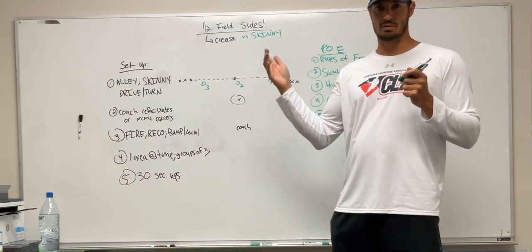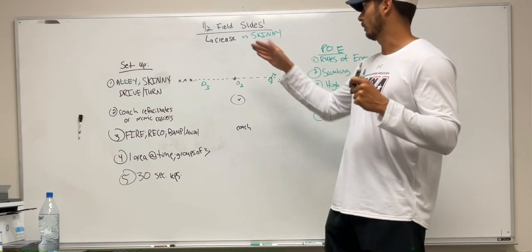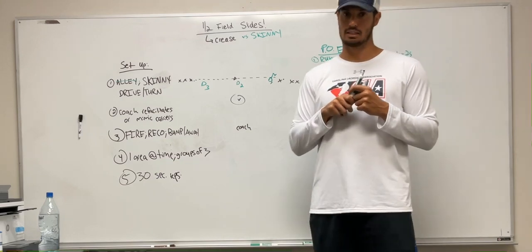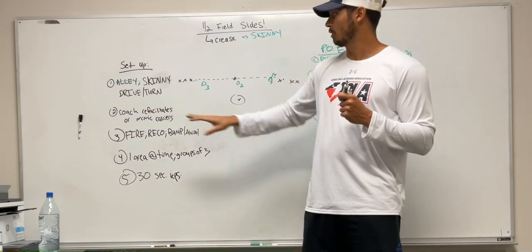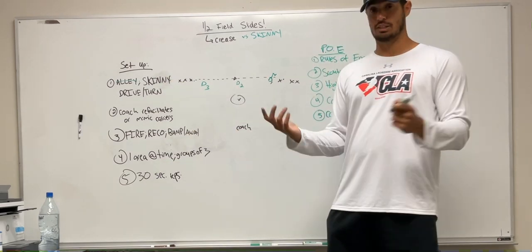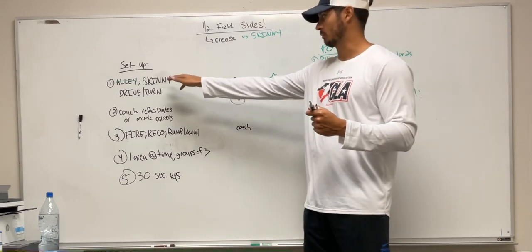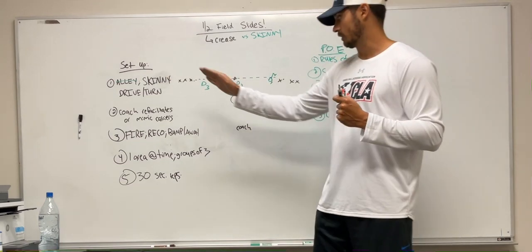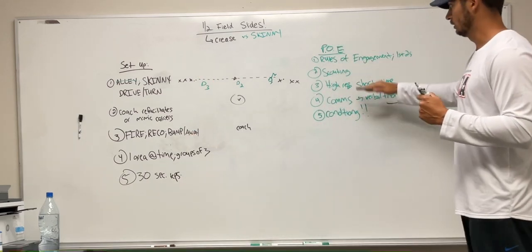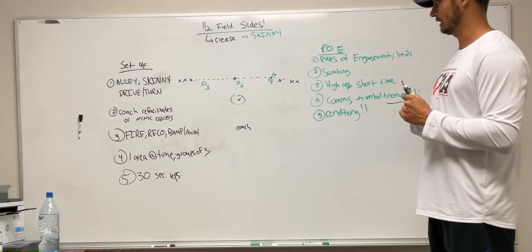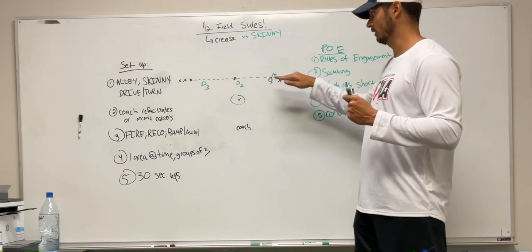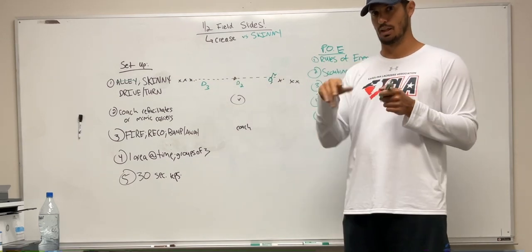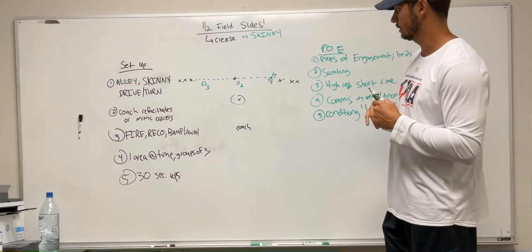In our last video, which was crease versus midfield in alley, make sure you watch that one first because I go over a lot of the setup. This is a continuation of that video where we're going to focus primarily on the skinny, which is against wing dodgers. All of our setup stays the same, all of our points of emphasis stay the same. Now we're just going to focus on dodgers at that midline that we talked about in terms of upper and lower. Now we're talking about wing dodgers.